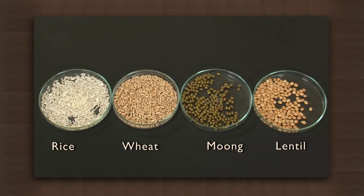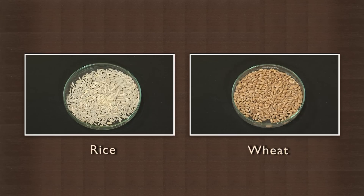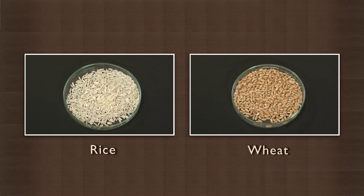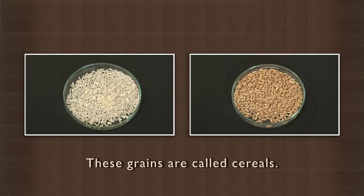We need samples of rice, wheat, moong, and lentil. The rice and wheat seeds or grains we have here are edible and are produced in large numbers on a single stalk. The plants which produce them are grasses — monocotyledonous plants. These grains are called cereals.